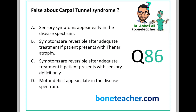Let's look at this MCQ. It says: false about carpal tunnel syndrome. A - sensory symptoms appear early in the disease spectrum. B - symptoms are reversible after adequate treatment if patient presents with thenar atrophy. C - symptoms are reversible after adequate treatment if patient presents with sensory deficit only. D - motor deficit appears late in the disease spectrum.